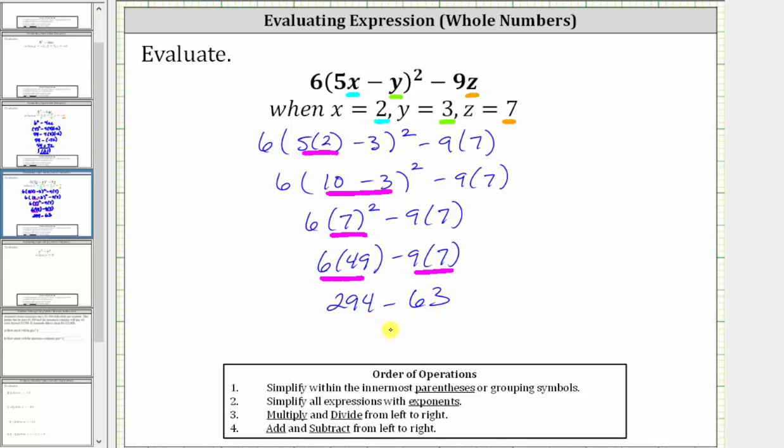And of course, the last step is to determine the difference. 294 minus 63 equals 231. The expression 6(5x - y)² - 9z is equal to 231 when x equals 2, y equals 3, and z equals 7.